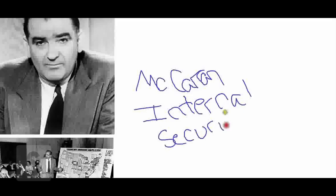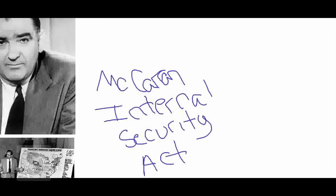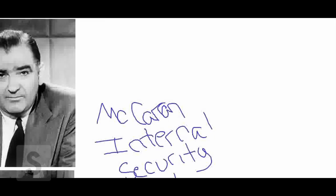In 1950, the McCarran Internal Security Act was passed over the veto of President Harry Truman. This act essentially outlawed communism as a political movement in the United States. Anyone who was communist or affiliated with communism or the Soviet Union was forced to register with the government. The idea was that most people would stop being communist out of fear of registering, and that in the event of a war with the Soviet Union, these people could be rounded up and put in internment camps for the duration of the conflict. Many challenged this in the courts — some provisions were struck down, others upheld — but it was again a reflection of the growing paranoia and fear in the United States about the threat of communism.